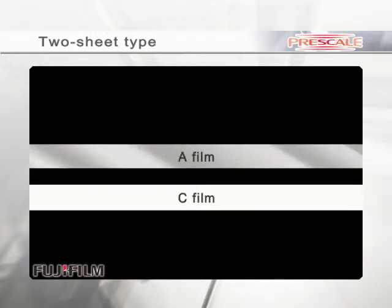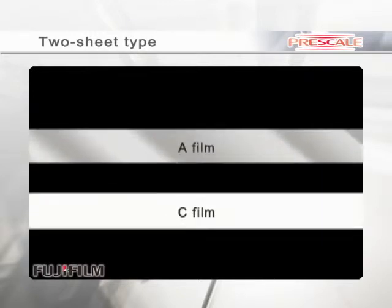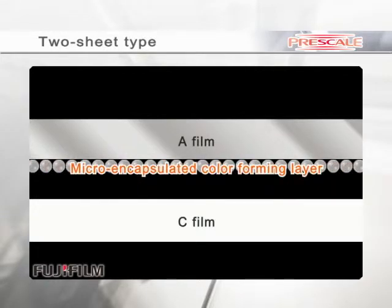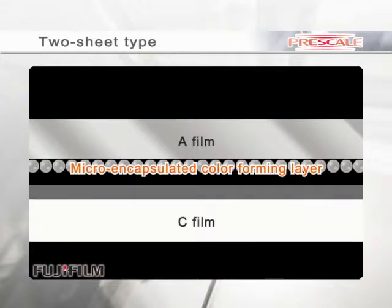The two-sheet type consists of an A-film and a C-film. The surface of the A-film is composed of a micro-encapsulated color-forming layer. And the C-film has a color-developing layer on its surface.